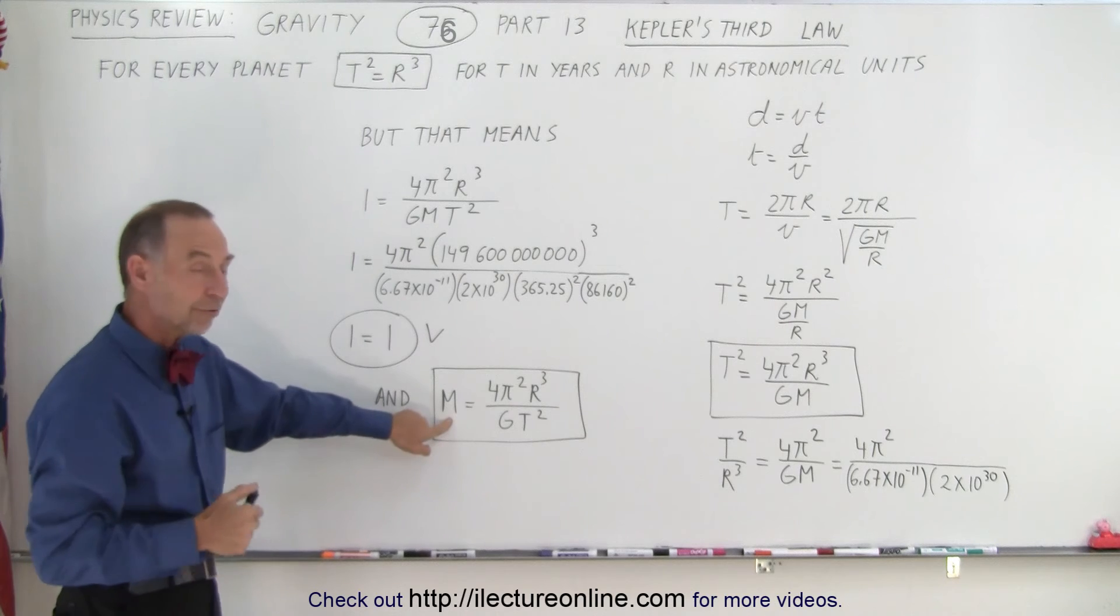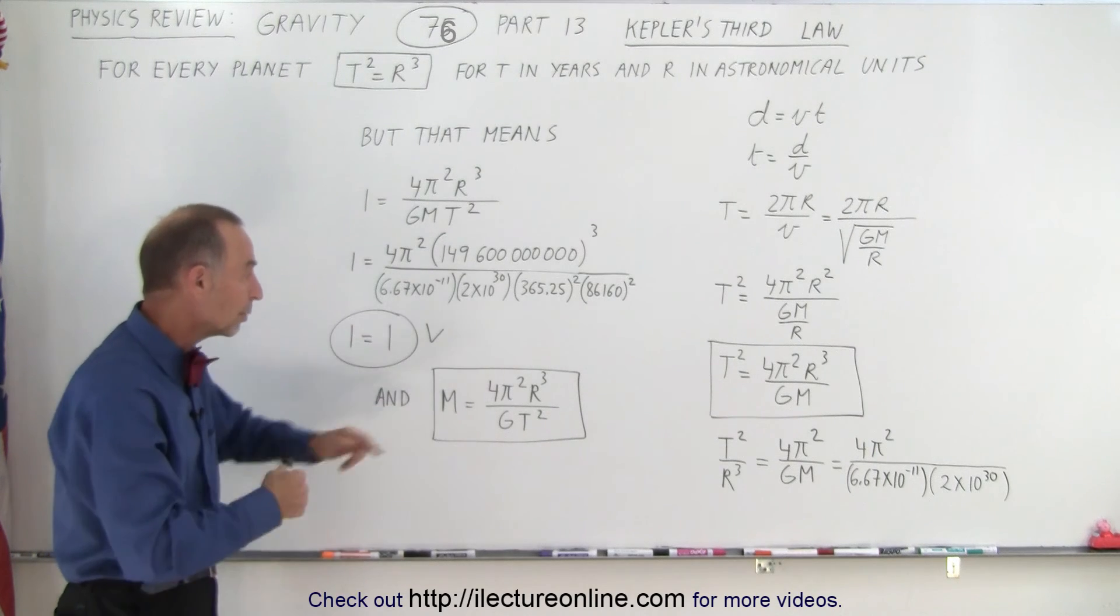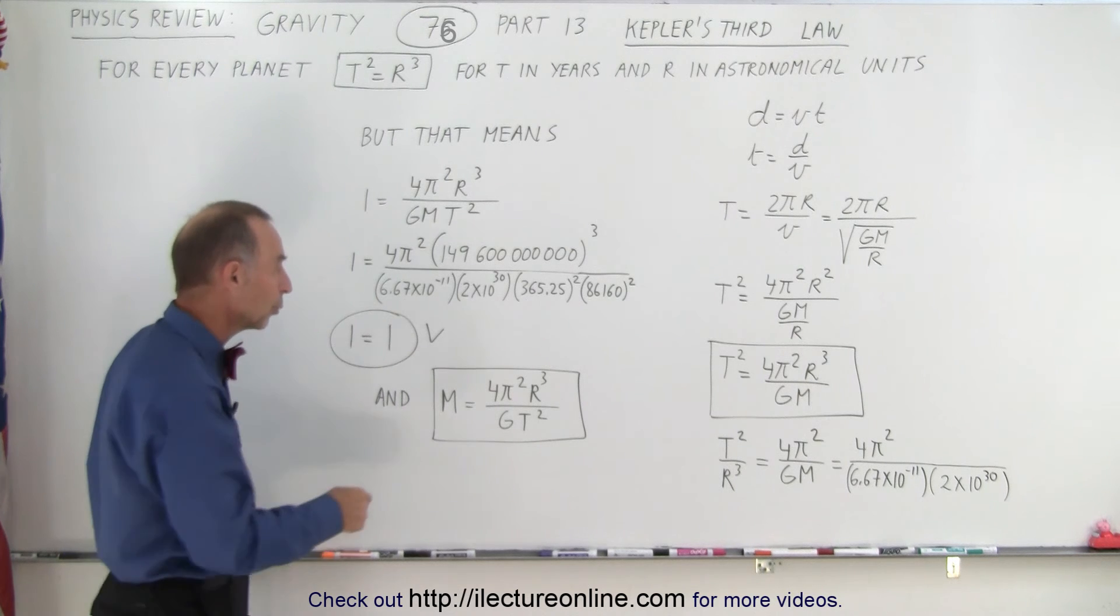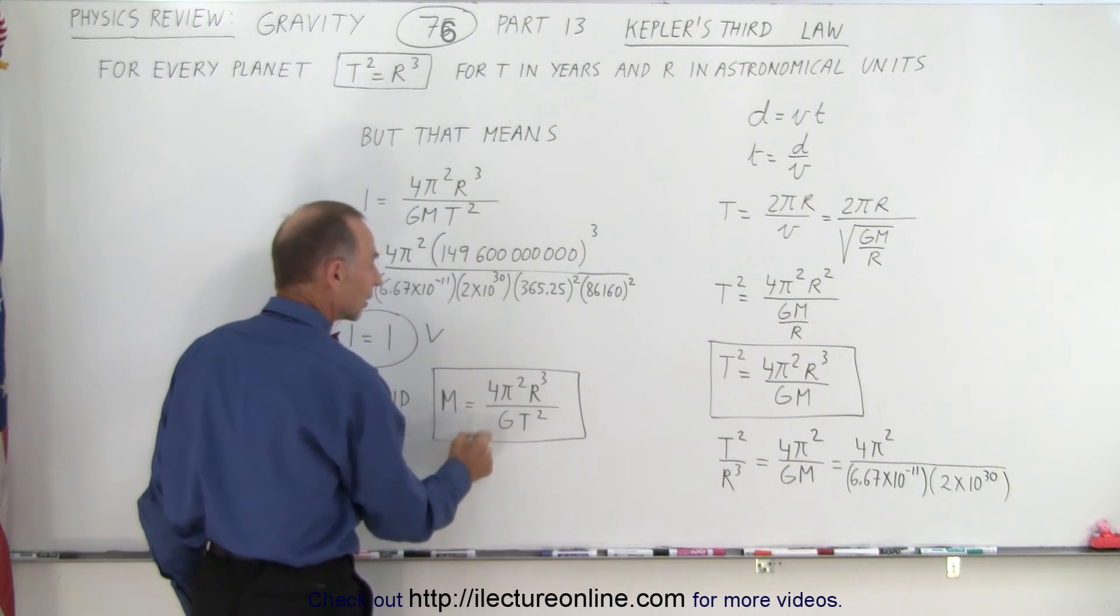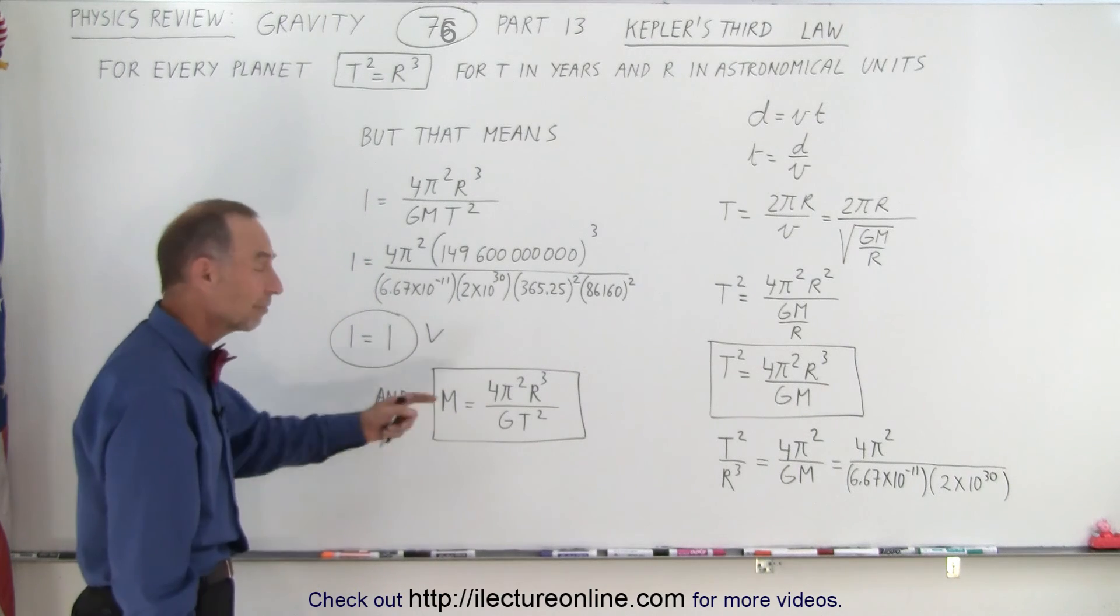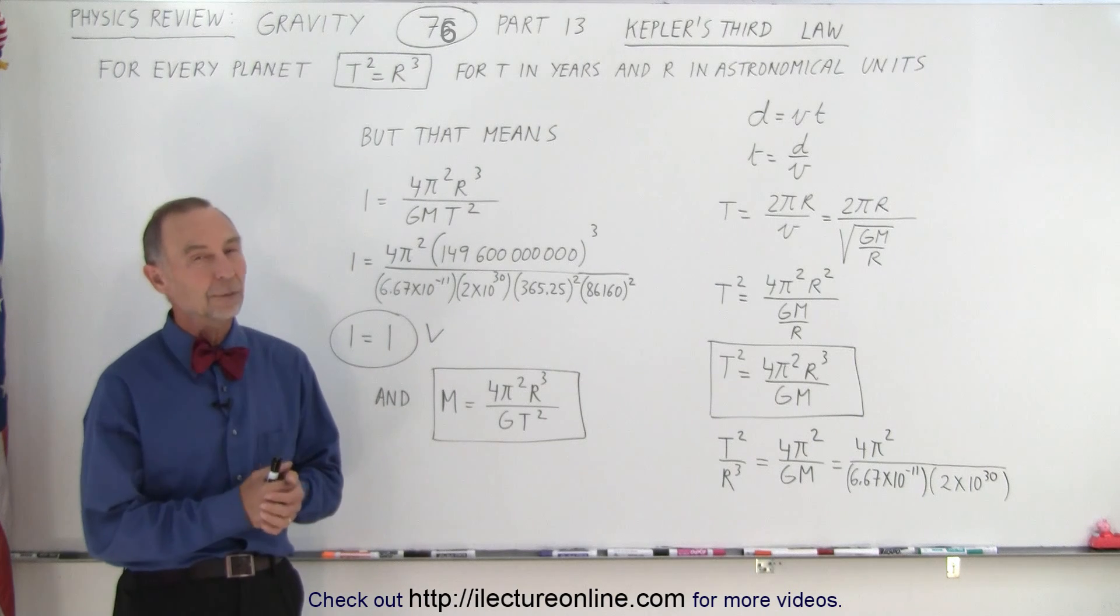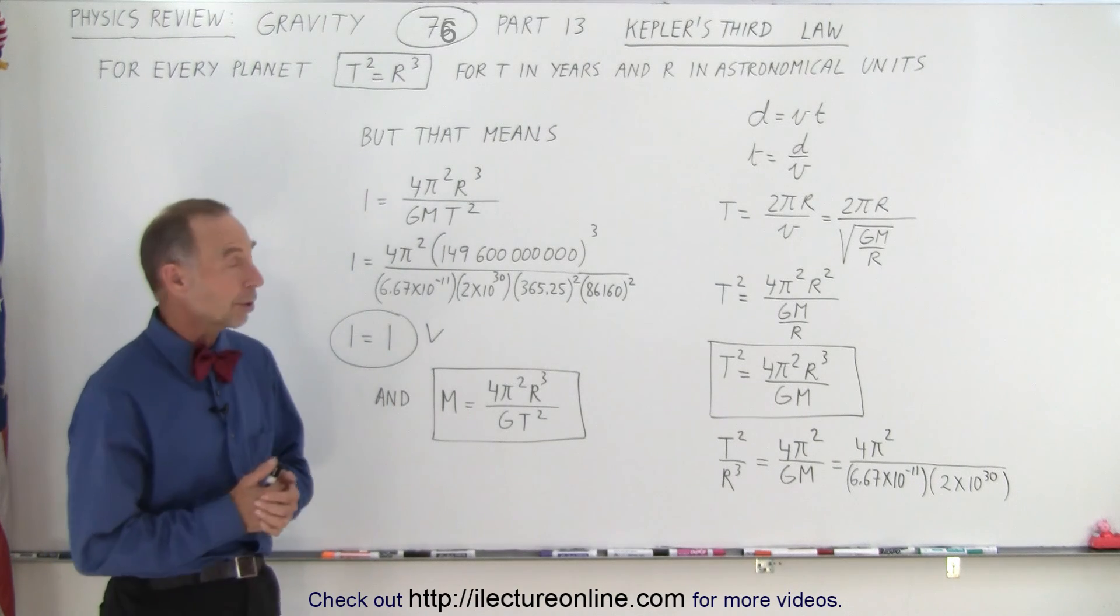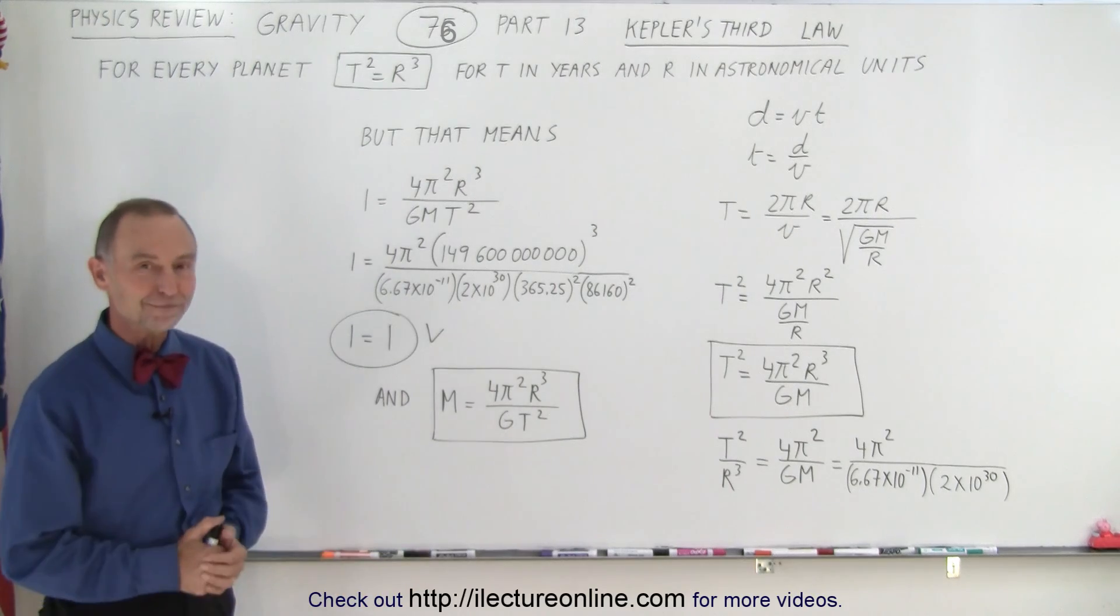Also it allowed us to figure out the mass of the object that we revolve around. So for example, if we know the radius between the sun and the earth, we know the period, and we know the gravitational constant, we could then figure out the mass of the object we're circling. So that was a tremendous discovery when Kepler figured out the third law, and that is how it's done.